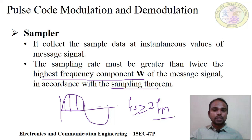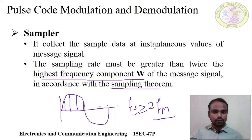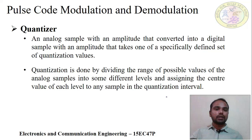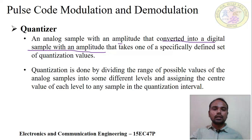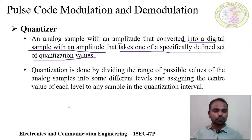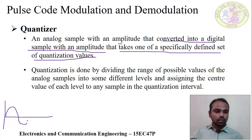To repeat: the sampler takes the instantaneous values of the message signal. The sampling frequency must be greater than or equal to 2fm, where fm is the message signal frequency. Now, the quantizer converts the analog sample into a digital sample. The analog sample amplitude is mapped to a specific defined set of quantization values.